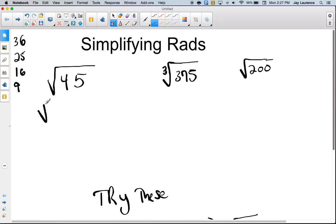So I'm going to rewrite this square root of 45 as the square root of 9 times the square root of 5. Square root of 9 is 3. Square root of 5 is 5. And there you go. Bam.